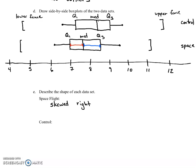For the control group, it looks like it's skewed left, but it's hard to tell from the box plot.